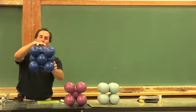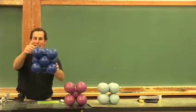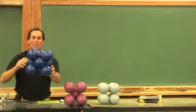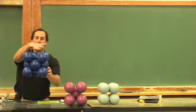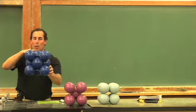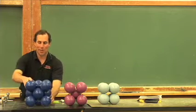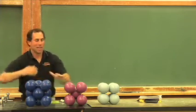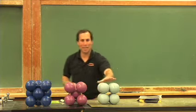So we have a total of three atoms because of the faces. Each one of these face atoms is half contained in the unit cell. So we have six times one-half for three, plus we have our eight corner atoms at one-eighth each. So this one contains four atoms inside the unit cell. This contains two, and this one contains one.